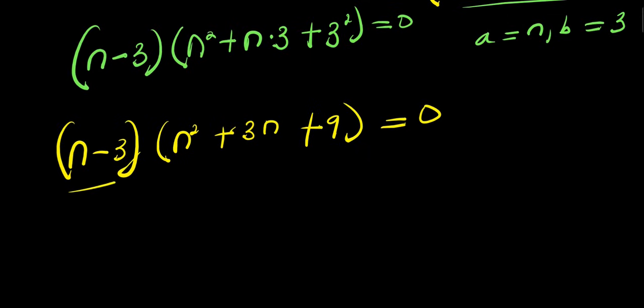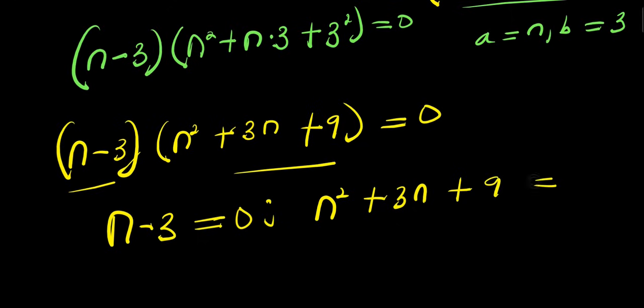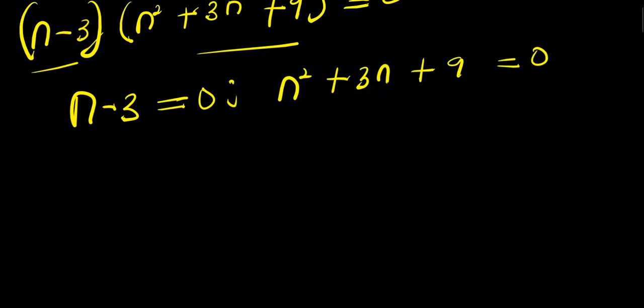So I can equate each of these to zero. n - 3 = 0, and n² + 3n + 9 = 0. So let's solve these individual equations.